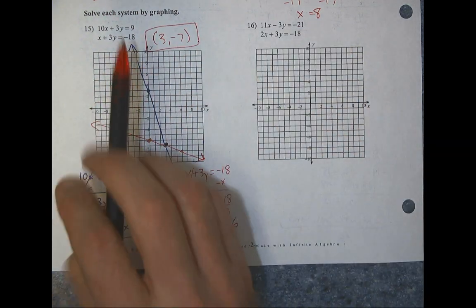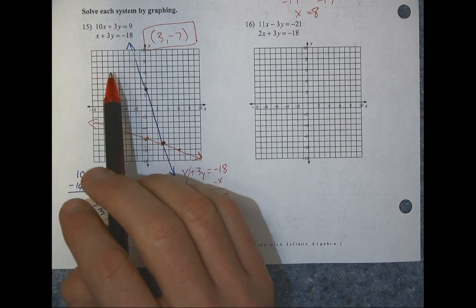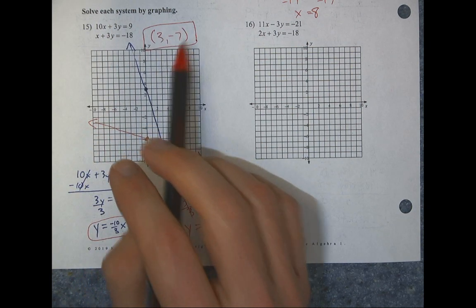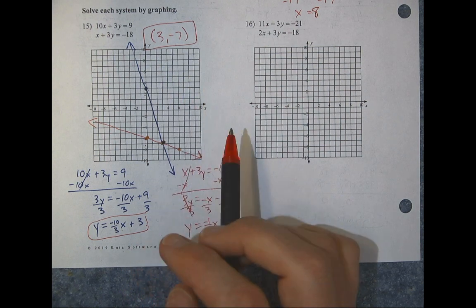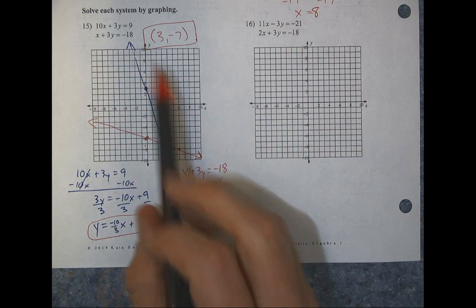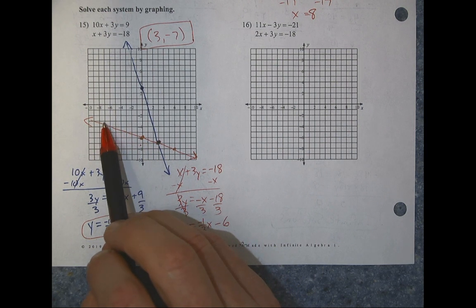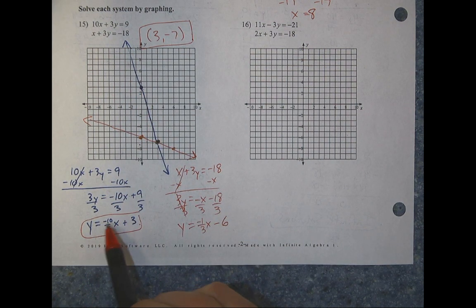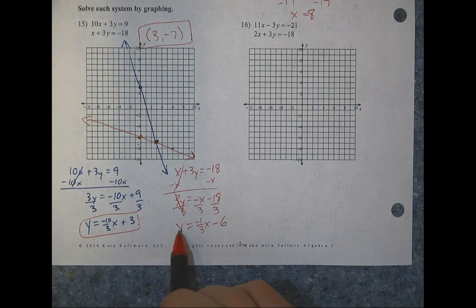Lining up my x and y values at the intersection gives x equals 3 and y equals negative 7. If you'd used linear combination instead — making one equation's y negative and canceling — you'd also get x equals 3 and y equals negative 7. All methods give the same result: it's the point where the two lines cross, the only ordered pair that makes both equations true.